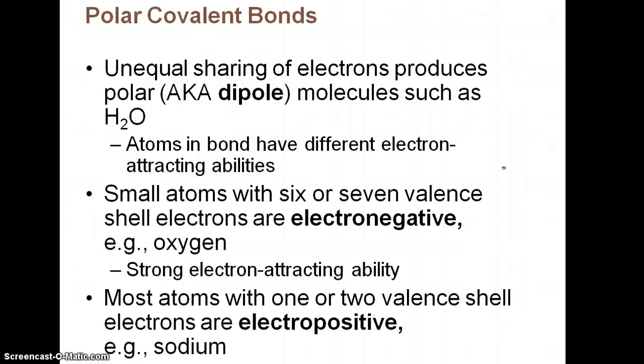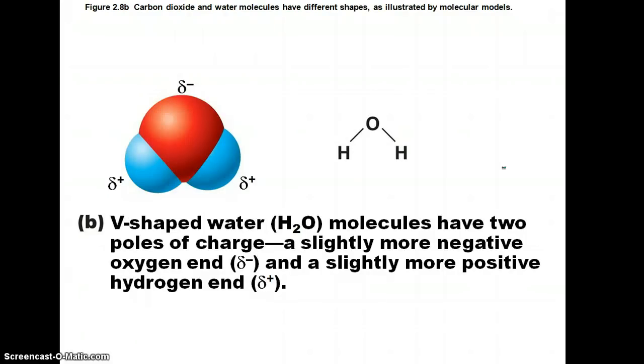Versus polar covalent bonds are when you have unequal sharing of electrons. And we call those dipole molecules. Water is an example of a dipole molecule. And this is because they have different electron-attracting abilities. So smaller atoms with six or seven valence shell electrons are going to be electronegative. Oxygen has six in its valence shell, so it is very electronegative. So it's going to attract the electrons more than, let's say, hydrogen, which only has one electron in its valence shell. Which, therefore, leads to this awkward shape of an upside-down, usually it's turned the other way, it kind of looks like Mickey Mouse, of a water molecule. So it does make it look kind of lopsided, and that is also what results in the partial negative charge of the oxygen and the partial positive charges of the hydrogens.